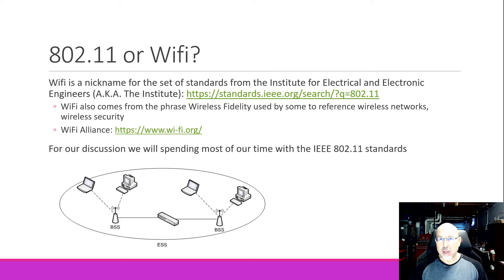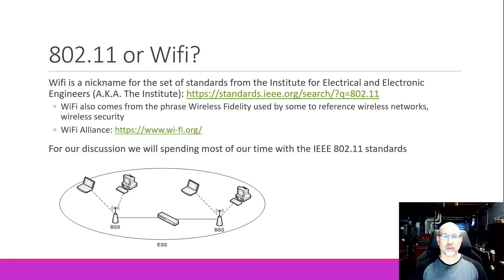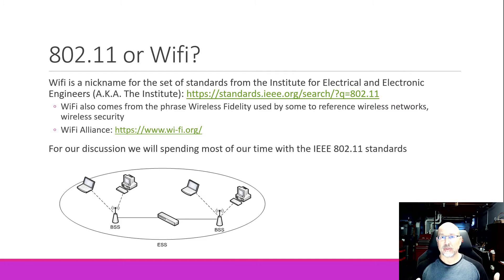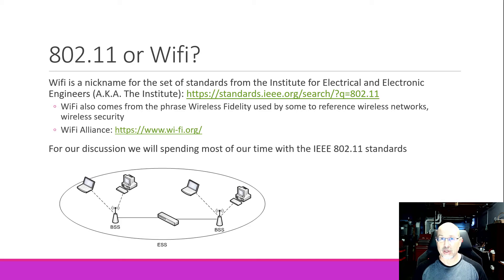But why does everybody say Wi-Fi? Wi-Fi is a short version of the phrase 'wireless fidelity,' which some folks use to refer to wireless networks or wireless security. We'll talk later on about wired equivalent privacy. For the most part, we say that this term came from the Wi-Fi Alliance — they have a lot of good information out there too. So when we say Wi-Fi or 802.11, we're talking about the same thing, and we'll be spending almost all of our time with the specifics in the 802.11 set of standards from the IEEE.